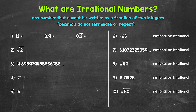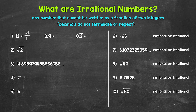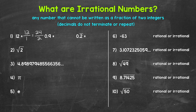For 12, how can we write this as a fraction of two integers? Well, we can write this as 12 over 1, which equals 12. How about 24 over 2? That also equals 12. So we can write 12 as a fraction of two integers, so it is rational.